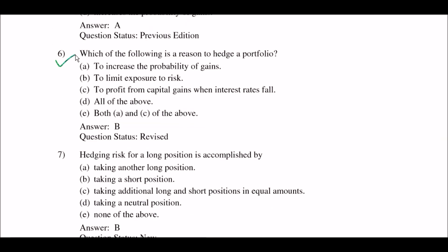Next question: which of the following is a reason to hedge a portfolio? Option A: to increase the probability of gains; option B: to limit exposed risk; option C: to profit from capital gains when interest rates fall; option D: all of the above; option E: both A and C of the above. The right answer is option B: to limit exposure to risk.